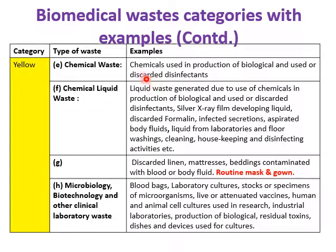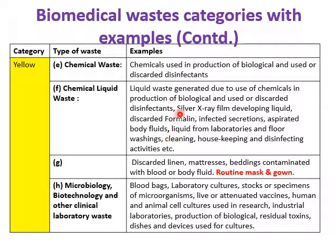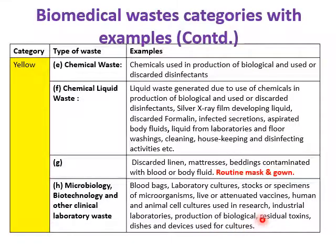Chemical liquid waste includes discarded disinfectants, silver film developing liquid, discarded formalin, floor washings, and housekeeping and disinfectant activity waste. Discarded linen, mattresses, and beddings contaminated with blood or body fluids also fall under yellow. Per the 2018 amendment, routine masks and gowns have been added. Microbiological, biotechnology, and other clinical lab waste includes blood bags, lab cultures, stocks, vaccines, animal cell cultures, devices used for cultures, and residual toxins.